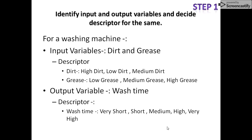In step one, we identify input and output variables, which are already given. Input variables are dirt and grease, and the output variable is wash time. For the descriptors of dirt and grease, we can choose them in our own way. For dirt, we can take high dirt, low dirt, and medium dirt — these are three. If we wish to take four, we can add very high dirt; if five, we can add very low dirt. Similarly for grease, we have low grease, medium grease, and high grease, and we can increase them as per our requirement.